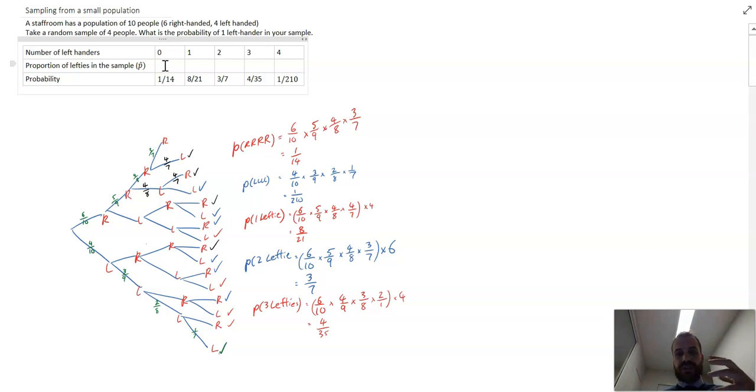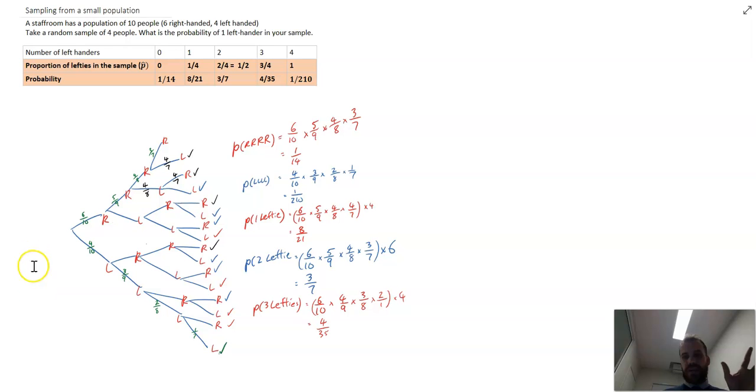In this first bit here, the percentage of the sample that were left-handers was zero, because there was zero left-handers. The percentage of left-handers in the sample here, there was one left-hander and there were four people in the sample. So one in four or 25%. There were two here. So there were two left-handers out of four. So that's two and four, which is of course equal to one half. The proportion of lefties when there were three out of four is three out of four. And here the proportion of lefties in the sample four out of four is one.